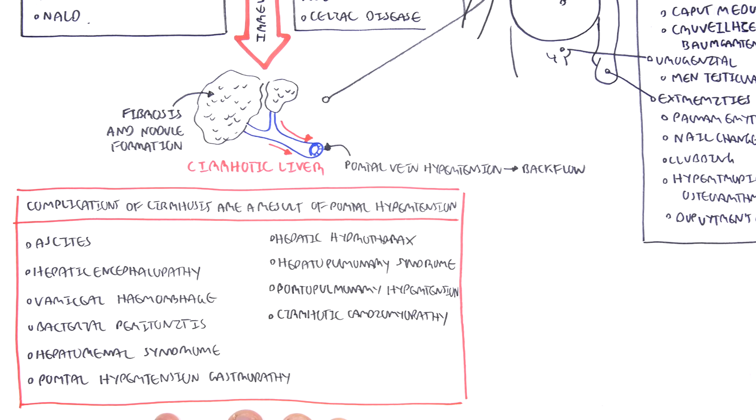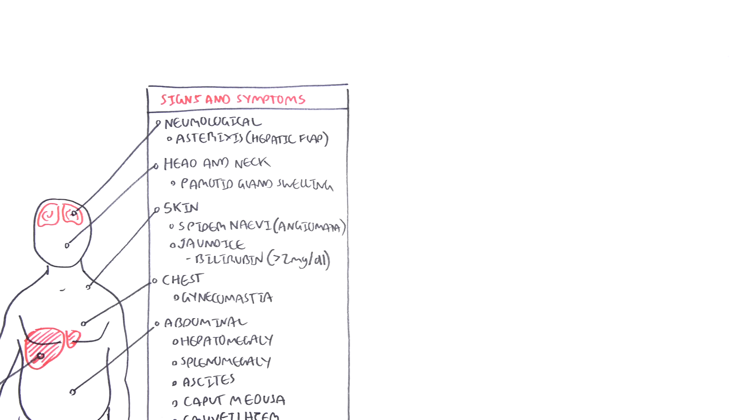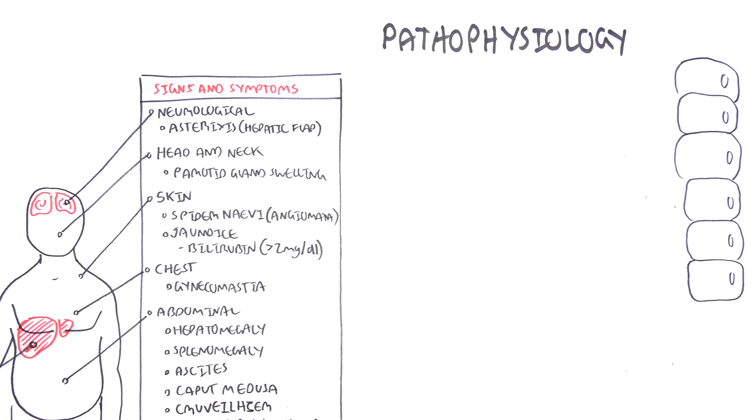We looked at the signs and symptoms of liver cirrhosis and some complications. If you want to learn more about those, I have a video on that. Next, let's look at the pathophysiology of how liver cells become cirrhotic.